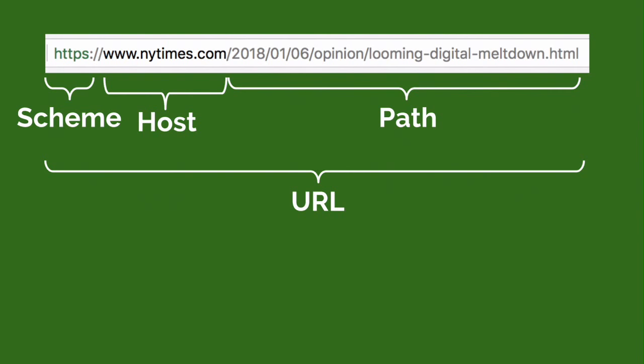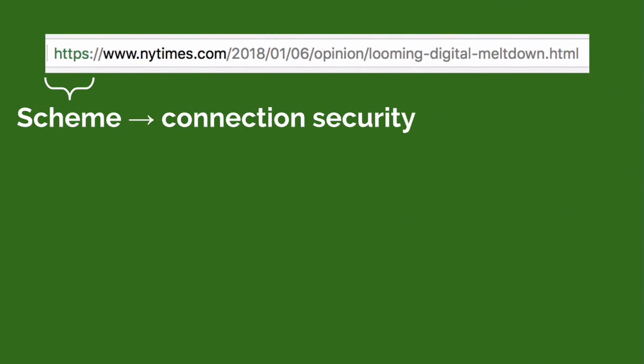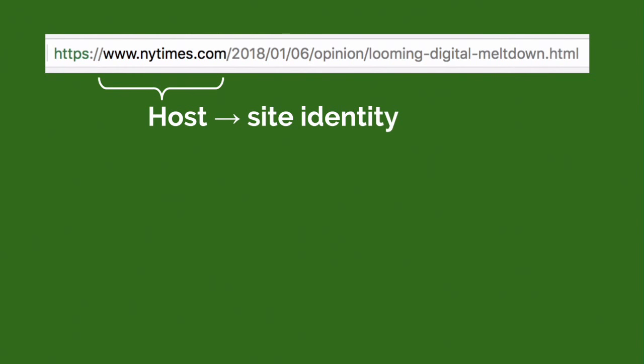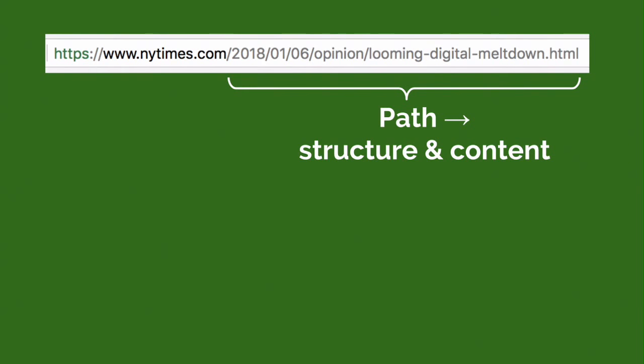In this talk, I'll go through four functions of URLs and for each one talk about how well URLs are actually achieving those goals, then give you some ideas for what might better solve those requirements. Here's a breakdown of URLs: starting from the left, we have the scheme, then the host, then the path, and the whole thing is the URL. The scheme is supposed to represent connection security — here it says HTTPS, so we know the connection is secure. The host is supposed to tell us about site identity — in this case, we know we're talking to the New York Times.